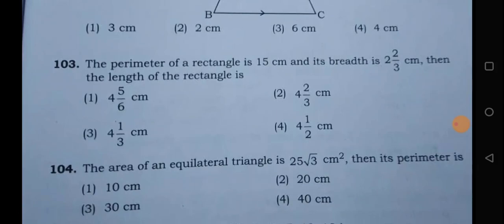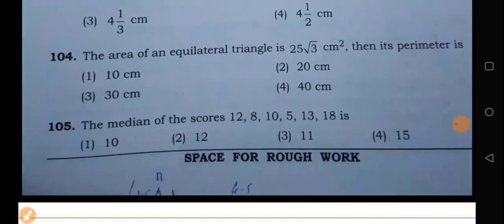And similarly, here, the perimeter formula is very easier one. So, the answer here is 4, 5 by 6. Similarly, the equilateral triangle is 30 cm. It is very easy.